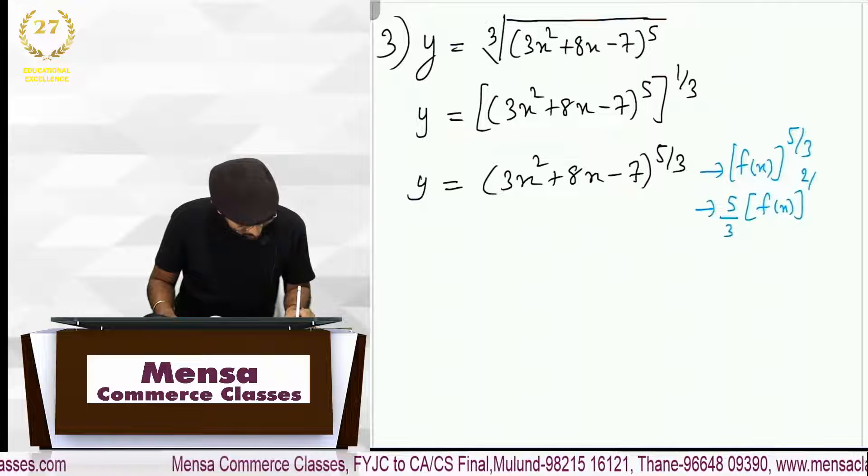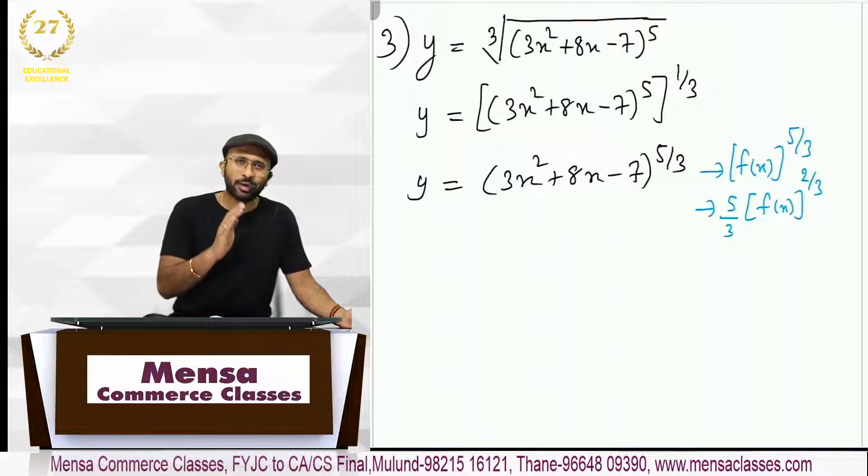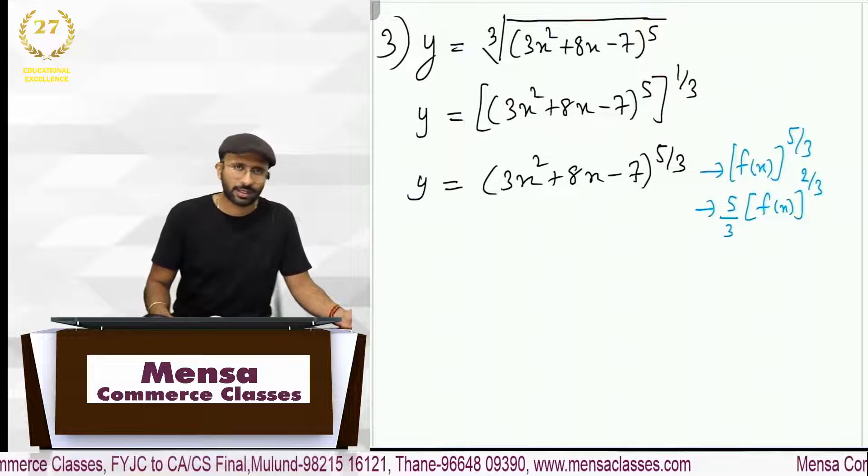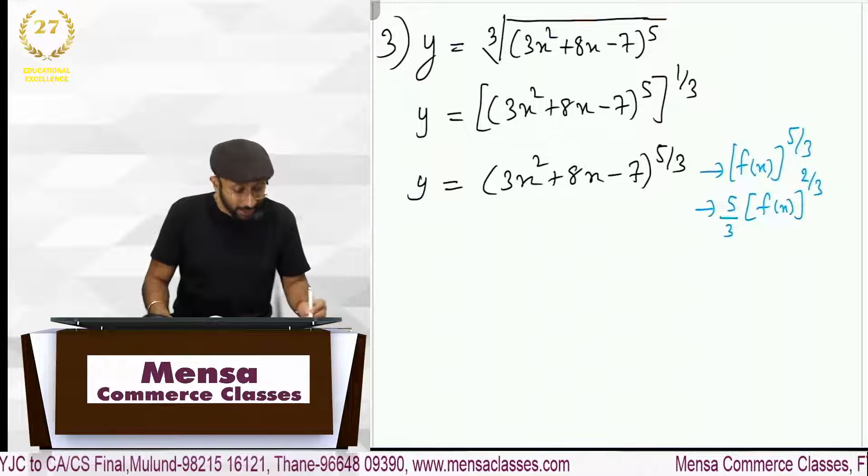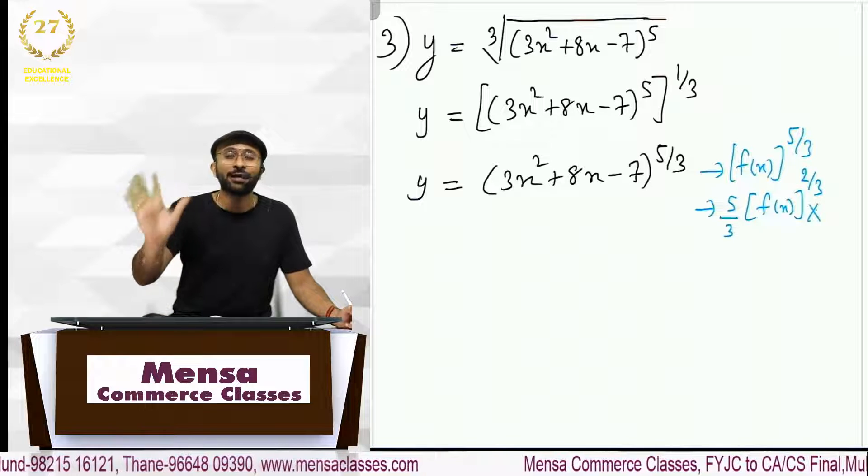5 minus 3 which is 2 by 3, basically it is n into x raised to n minus 1. 5 by 3 में से 1 subtract करोगे तो 2 by 3 आते है. ये तो हो गया standard formula का structure and then you have to multiply with derivative of f of x, correct.